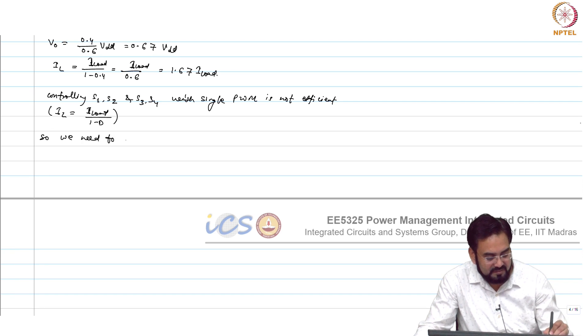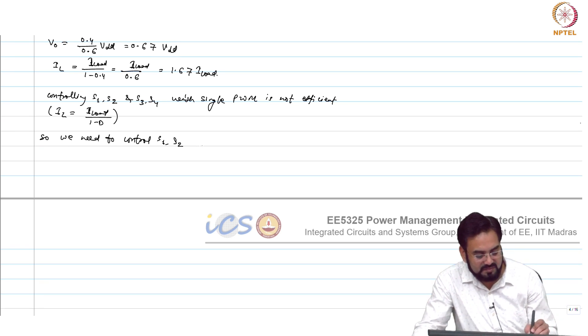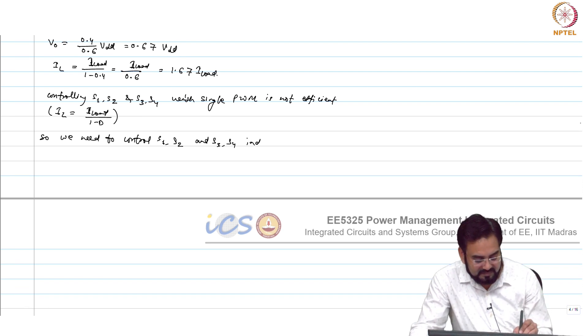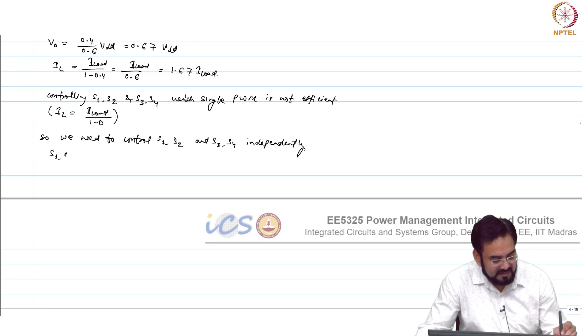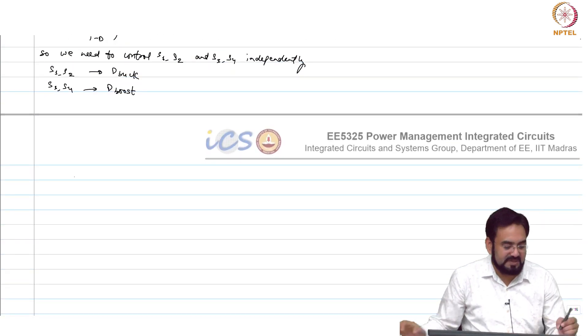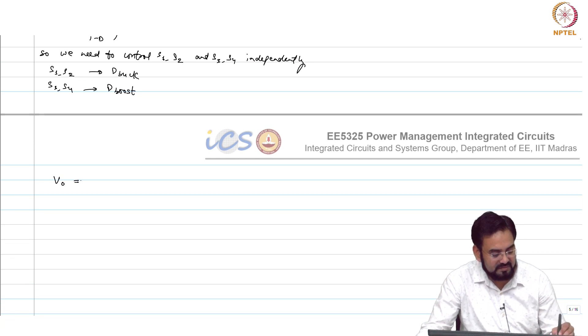We need to control S1, S2, S4 independently. Which means S1, S2 I will call it debug, S3, S4 dboost. Now, what will be the expression? V out equal to debug over 1 minus dboost times V dd.